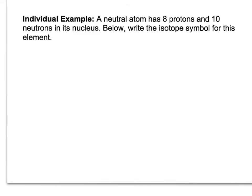So taking what we just learned, or reviewed, let's do this individual example. A neutral atom has 8 protons and 10 neutrons in its nucleus. Below, write the isotope symbol for this element. So pause the video here, try it, and then resume the video and check your answer.